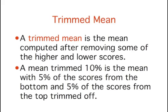A mean trimmed 10% is a mean computed with 10% of the scores trimmed off, 5% from the bottom and 5% from the top. Likewise, a mean trimmed 50% is computed by trimming the lower 25% of the scores and the upper 25% of the scores, and then computing the mean of the remaining scores.